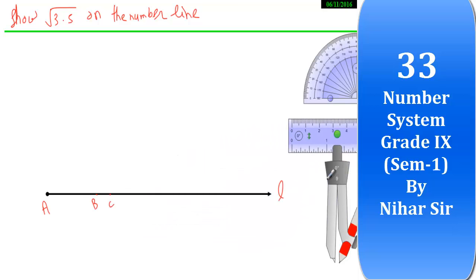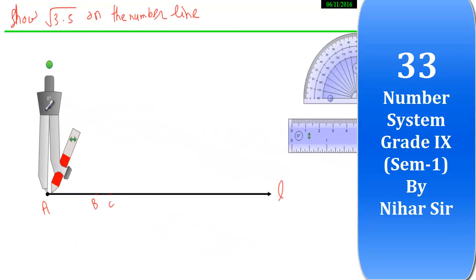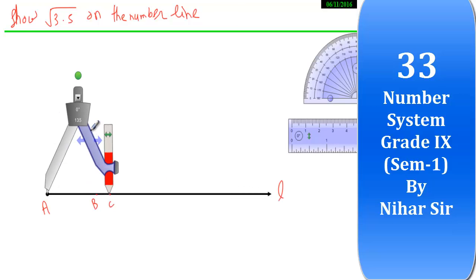Same method we did earlier. Now I will stretch my compass. I will take the radius AC and find the midpoint of AC by drawing perpendicular bisector.